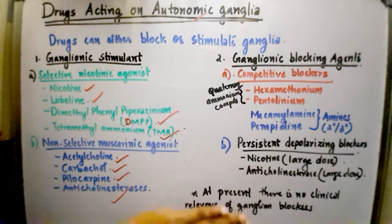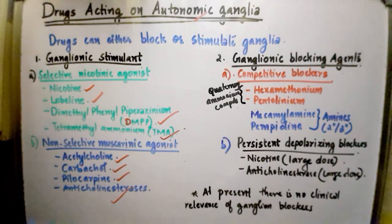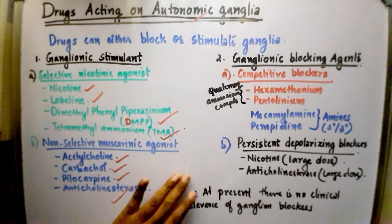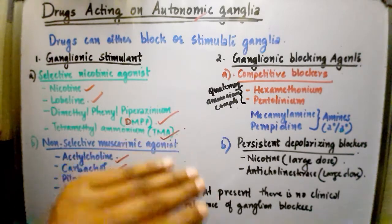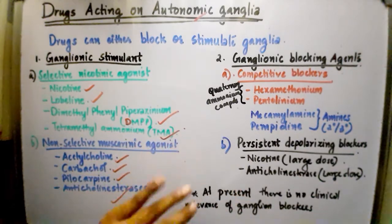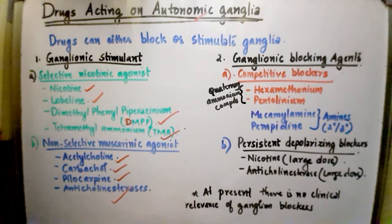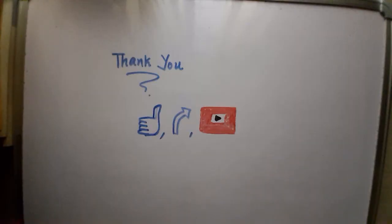Competitive ganglion blockers were used in the 1950s for hypertension and peptic ulcer but are now totally replaced because they produce a number of intolerable side effects. At present, there is no clinical relevance of ganglionic blockers. Thank you for watching — we will meet in the next class.